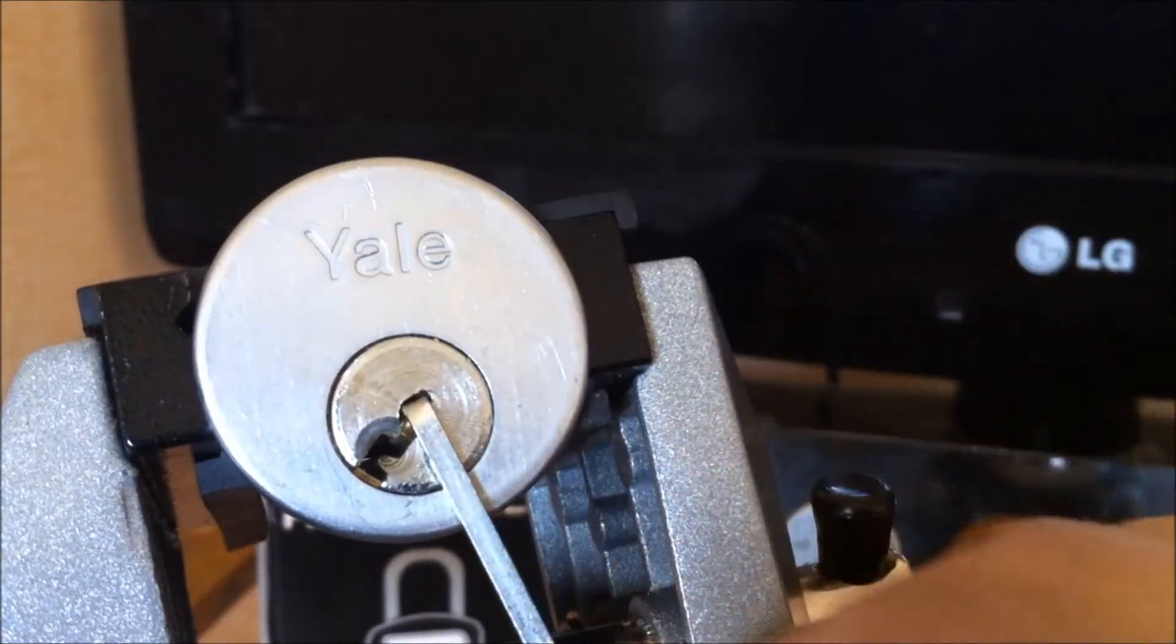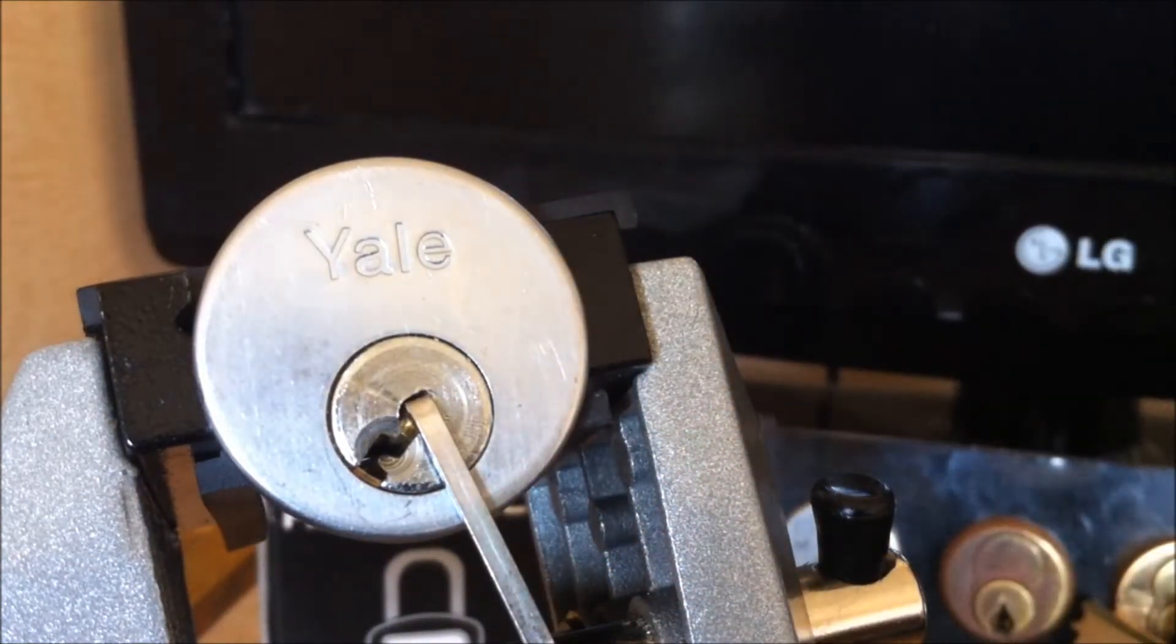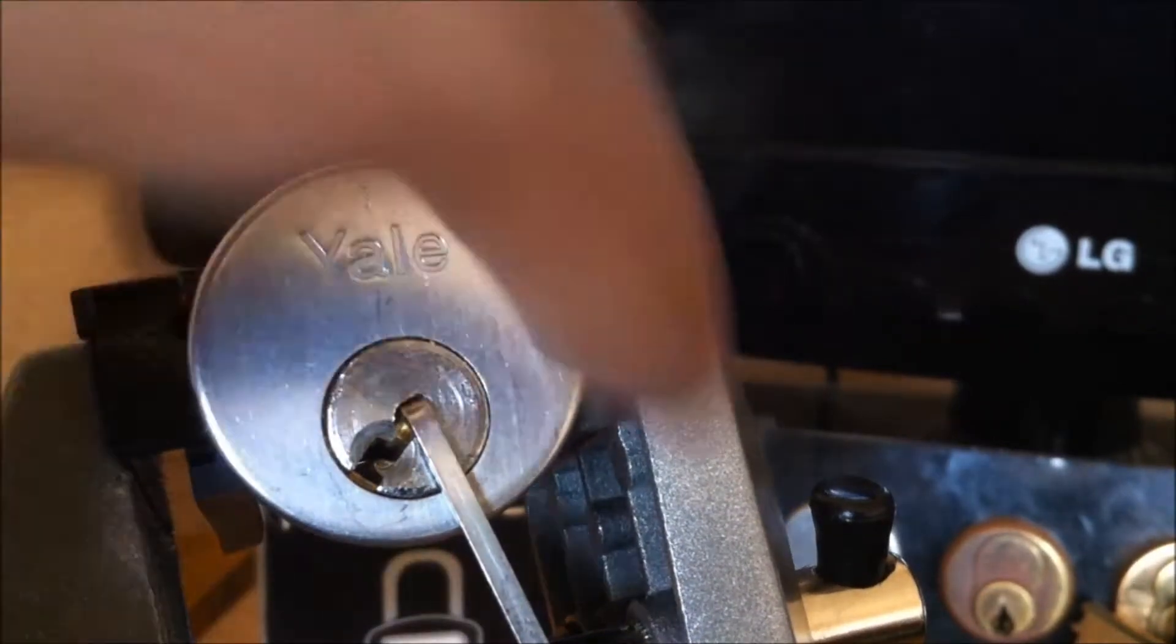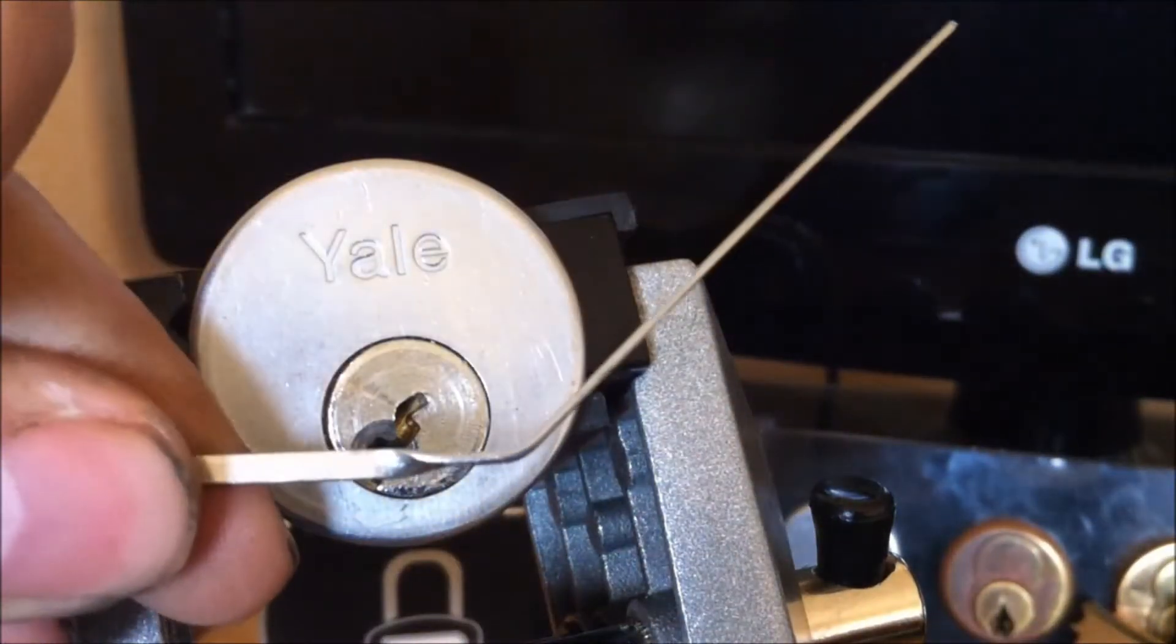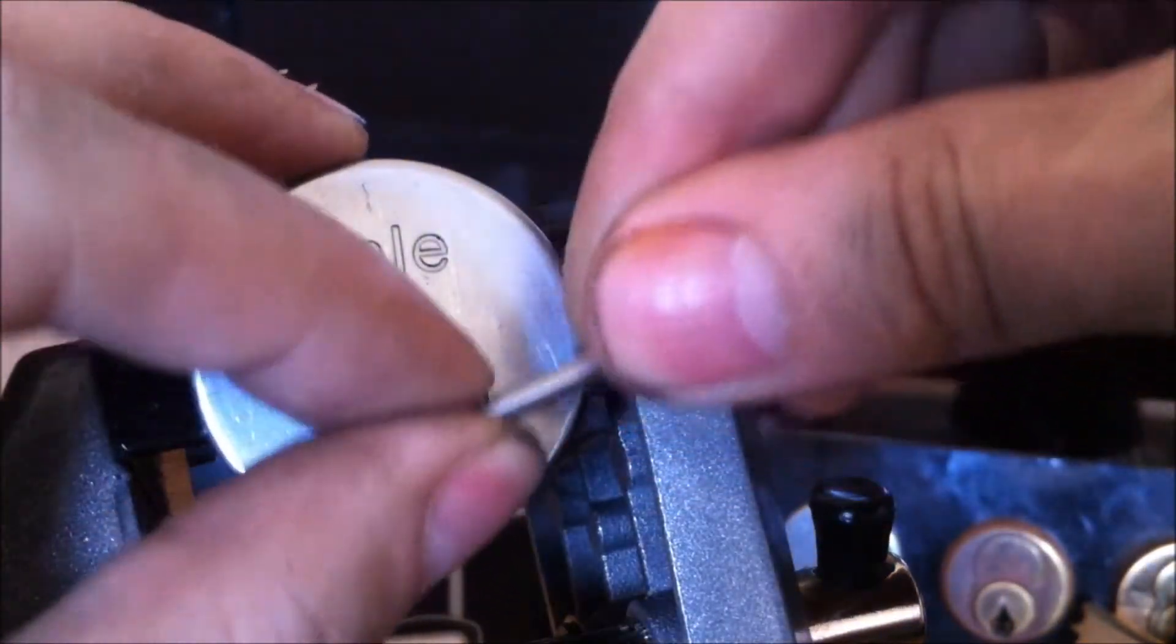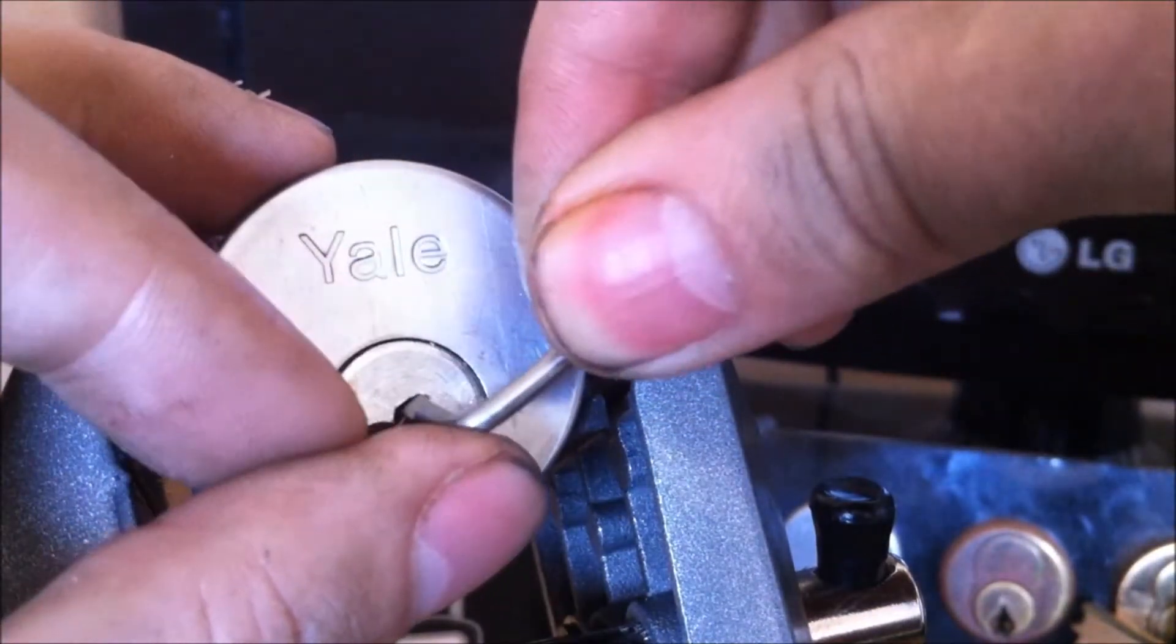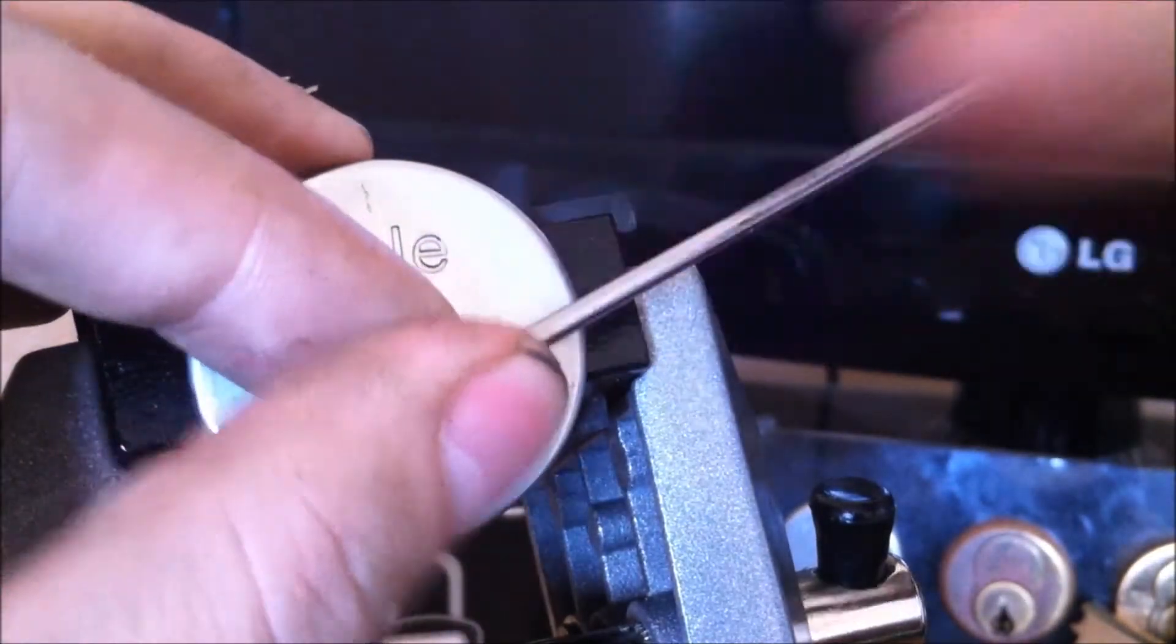I don't quite understand this, maybe someone can chime in in the comments, but I can get it open with that tension wrench quite easily as you've just seen, but when I use one of my music wire tension wrenches I can't seem to get it open at all.